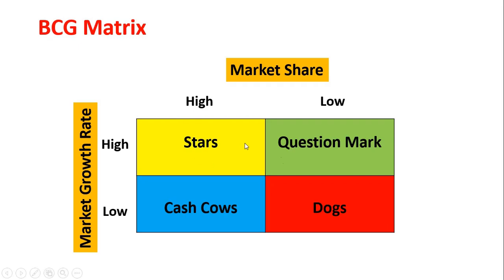On your screen you can see there are four components of BCG matrix: Stars, Question Marks, Cash Cows, and Dogs. On the horizontal axis you can see market share, and on the vertical axis is market growth rate.